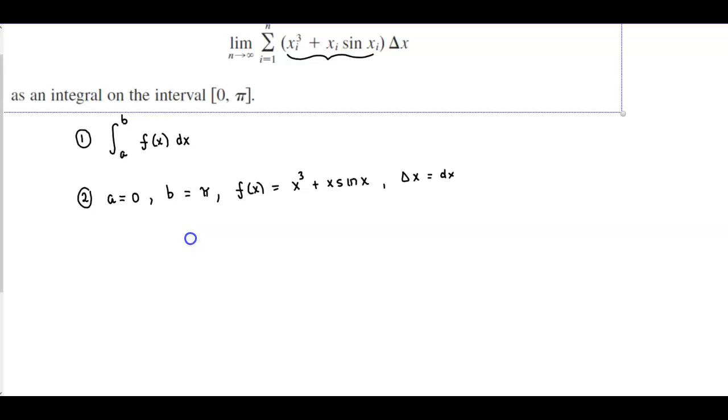So if we want to write this integral, we know that it's going to go from a to b, which is going to go from 0 to pi. We know that our function is x cubed plus x times the sine of x times dx, and therefore there is our integral.